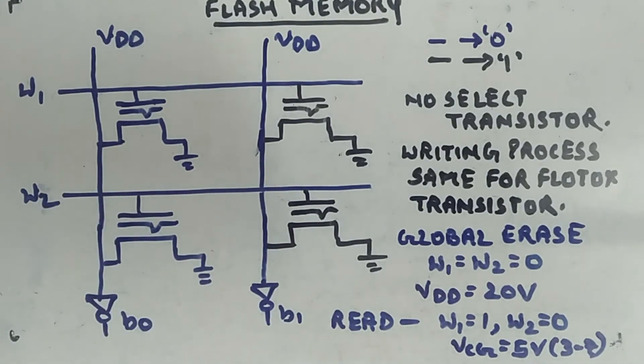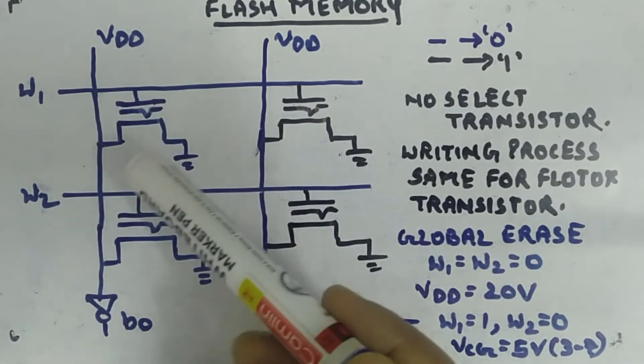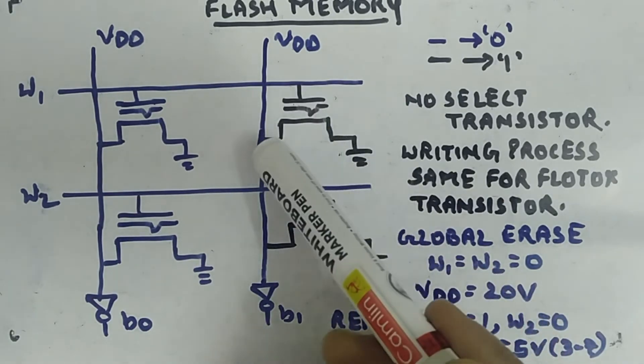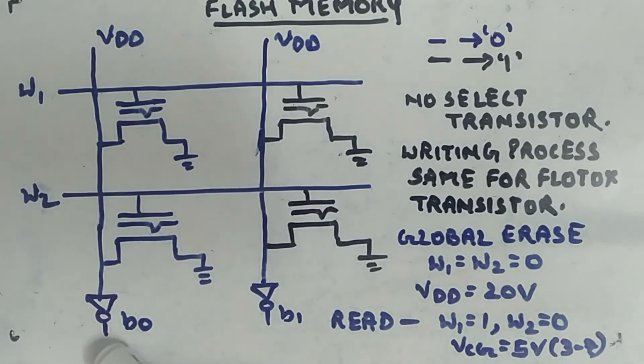You can read these two transistors. Since you are applying 5 volts, this one will not be on, this one will be on. If it is on here you will have zero, here you will have one. Inversion is there, so here you will get zero, here you will get one.